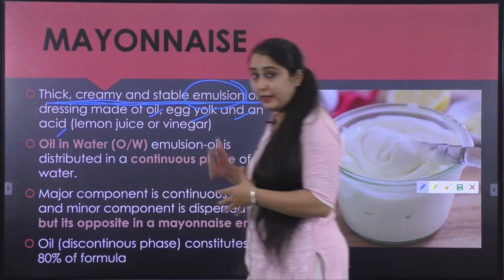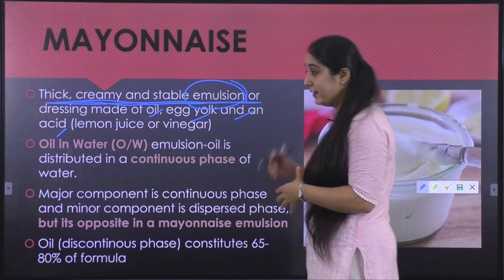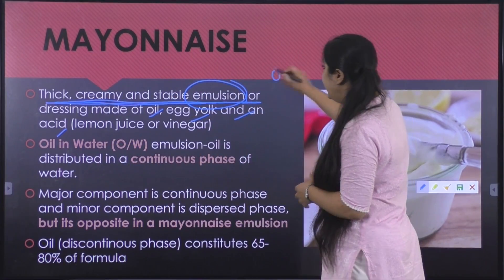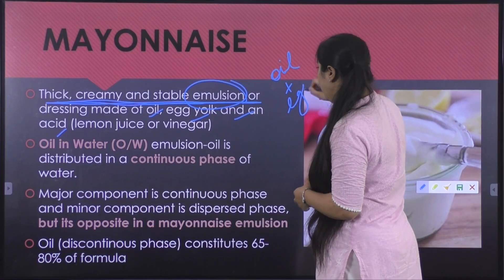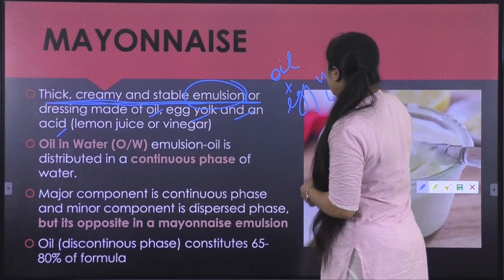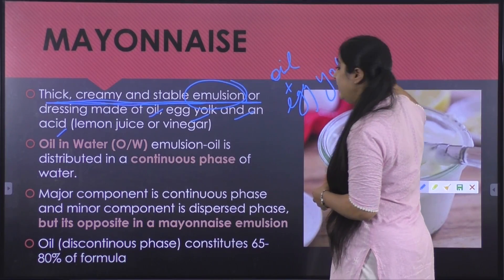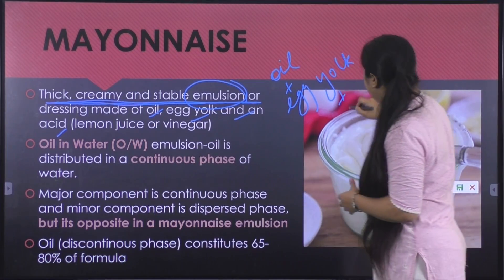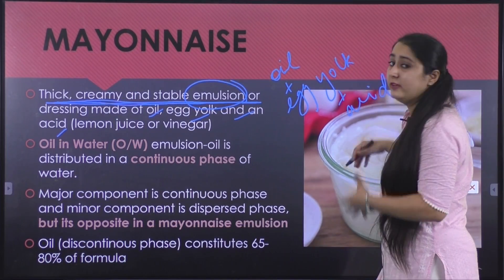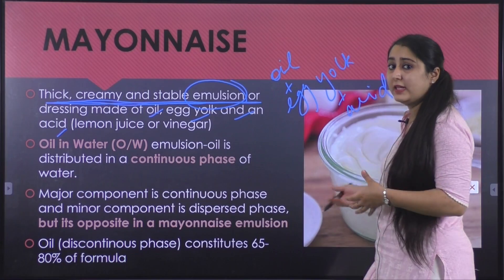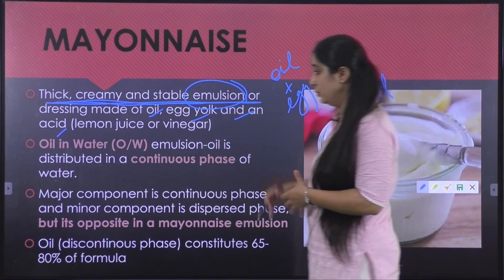The three main ingredients are: we are adding oil, then we are adding egg yolk, and then we are adding acid such as vinegar or lemon juice.